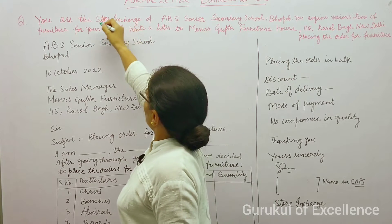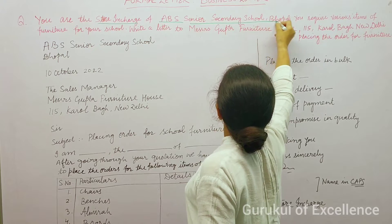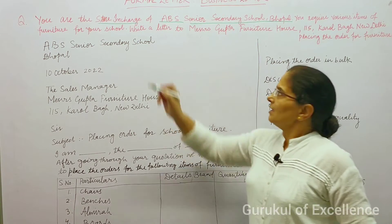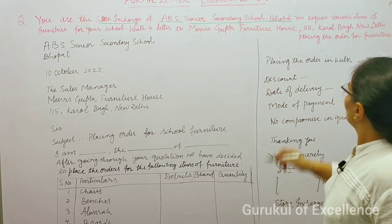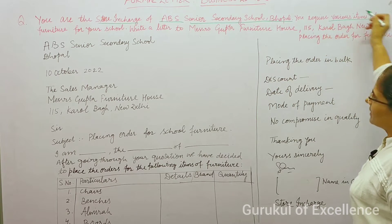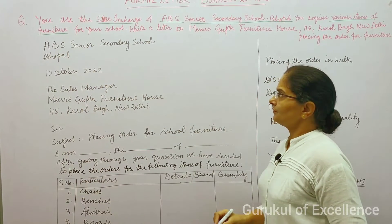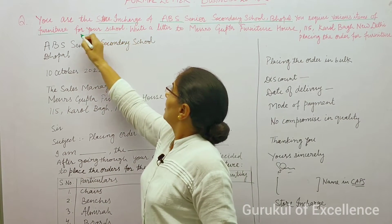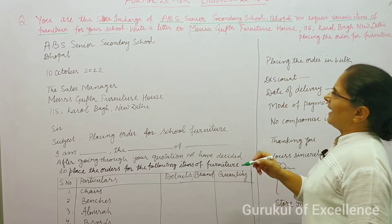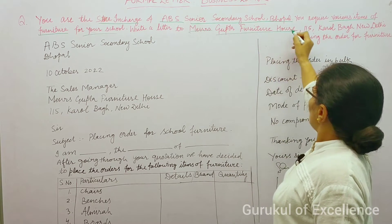You are the store in charge of ABS Senior Secondary School, Bhopal. You require various items of furniture for your school. Write a letter to Messrs — spelling M-E-S-S-R-S — Gupta Furniture House.